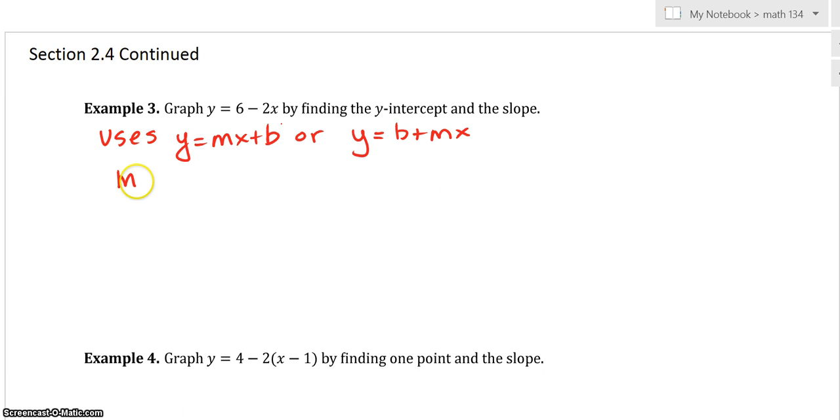What is the m? The m is in front of the x, so in this case it's -2. And what is the b? The b is the constant, so that would be the 6.